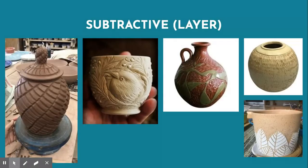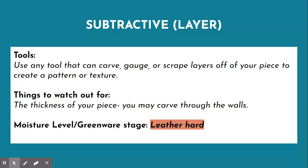The first technique I want to introduce you to today is the subtractive layer technique. Subtractive layer means the removal of clay from the surface, but it reveals a layer underneath. So you're not cutting all the way through the side of the vessel. You can remove small amounts depending on how thick your walls are to reveal texture. The tools you might use would be any tool that can carve, gouge, or scrape layers from your piece to create a pattern or texture.